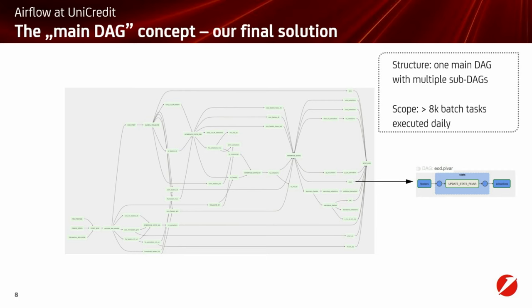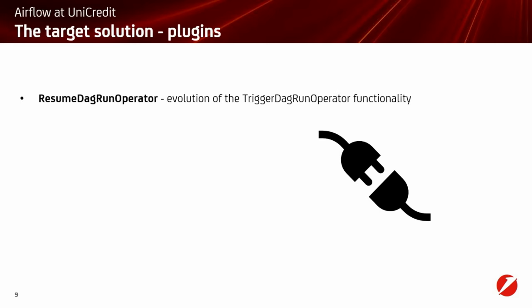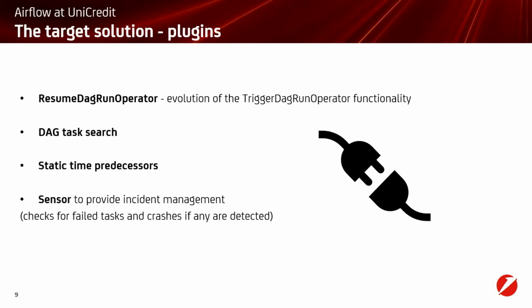As an additional advantage, we need to schedule only this one main DAG instead of all of them separately, and we are able to manage all failures from one place. To address the specific requirements of our local environment, we created a number of plugins for Airflow. These are: the Resume DAG Run operator, which enables resuming execution of a DAG with a failed task inside instead of restarting it from the parent DAG; a task search option in the Airflow toolbar; an upgraded DateTime Sensor to handle static time predecessors in case of severe delay of the parent process start; and a sensor script that checks the Airflow database for failed tasks, forcing a crash at the mainframe scheduler level to address incident management.